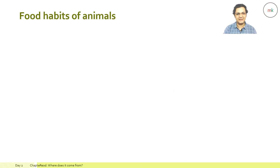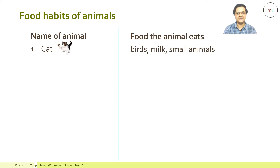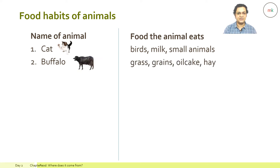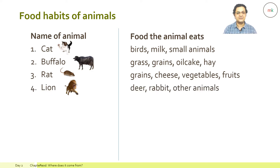Let's discuss food habits of animals. A cat likes to eat birds, milk, and small animals. A buffalo or cow likes to eat grass, grains, oil cake, and hay. A rat likes to eat grains, cheese, vegetables, and fruits.